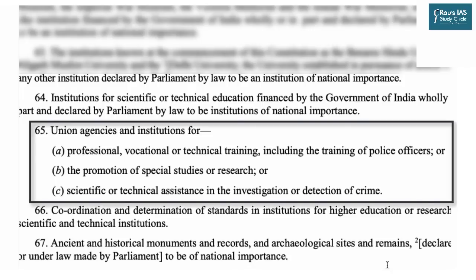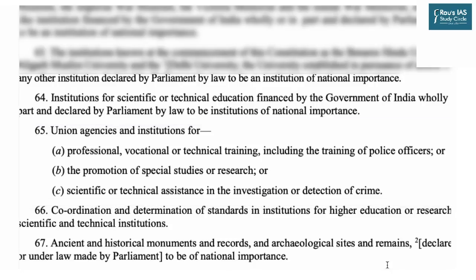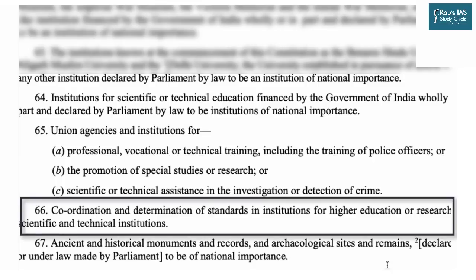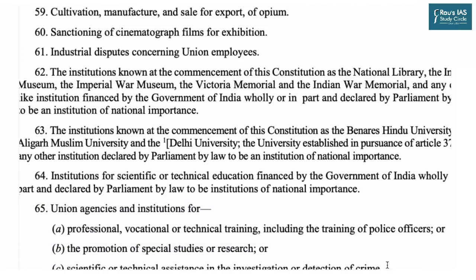Entry 65 includes training of police officers, as there is a police academy in Hyderabad. It also enables the central government to establish institutions for promotion of special studies or research and for scientific or technical assistance in investigation or detection of crimes. Entry 66 talks about coordination and determination of standards in institutions for higher education, research, and scientific and technical institutions — for which organizations like CSIR and UGC have been set up and run by the central government.